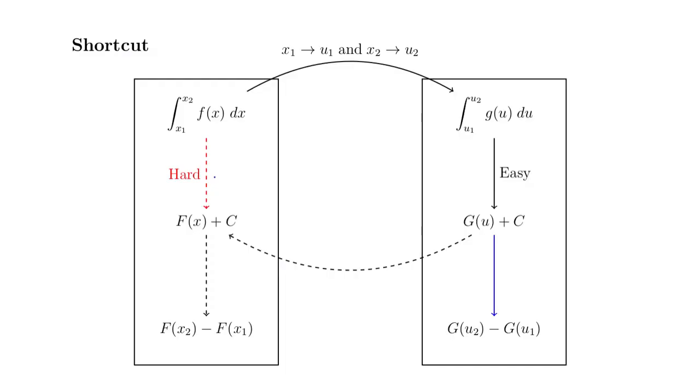Our shortcut is going to be this. We're going to skip all of this translation. And what we're going to do is once we find our antiderivative, we're going to bring over our limits of integration by converting these to u as well.